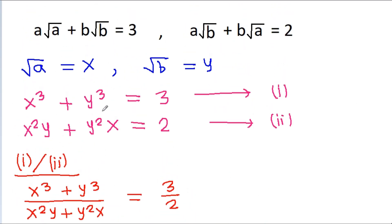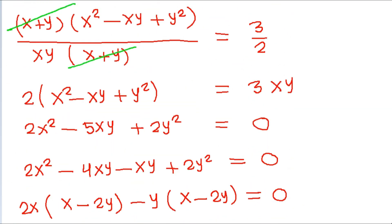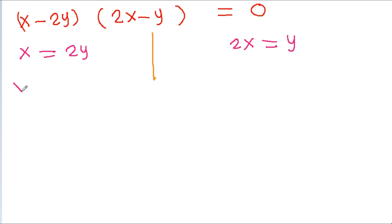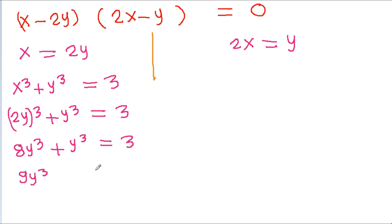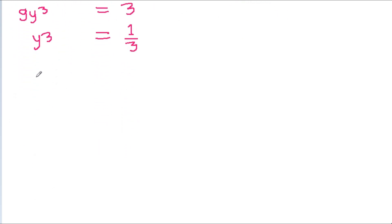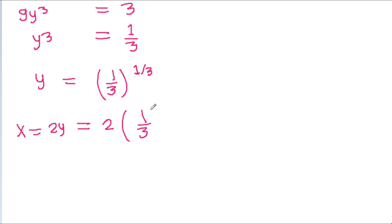Using equation 1: x cubed plus y cubed equals 3, and substituting x equals 2y, we get 8y cubed plus y cubed equals 3, so 9y cubed equals 3, giving y cubed equals 1/3, or y equals (1/3) to the power 1/3. Then x equals 2y equals 2 times (1/3)^(1/3).